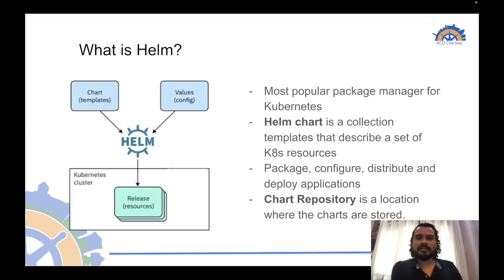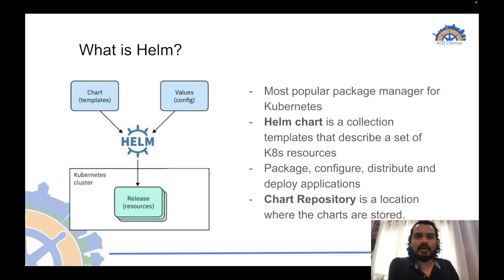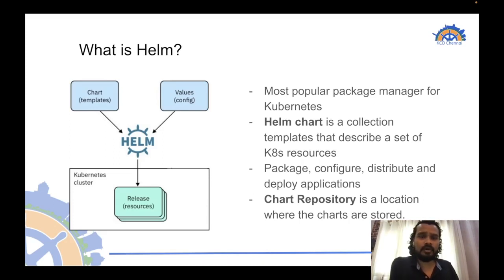A Helm chart is basically a collection of templates which renders some values and generates Kubernetes manifests that get applied to the cluster. You can package, configure, distribute, and deploy applications using a Helm chart. It is the most popular distribution channel for open source applications that can be deployed on a Kubernetes cluster.